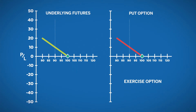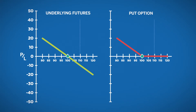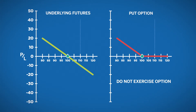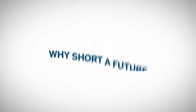This is when the put will have the same profit potential as the underlying future. However, when prices move up, you are not obligated to sell the future at the strike price, which is now lower than the futures price, because that would create an immediate loss.